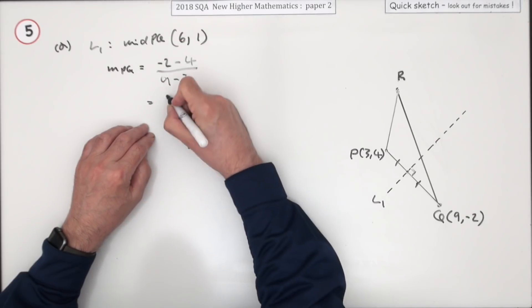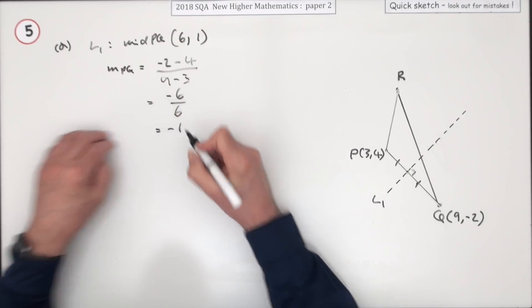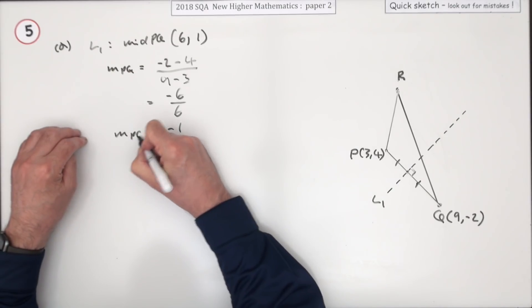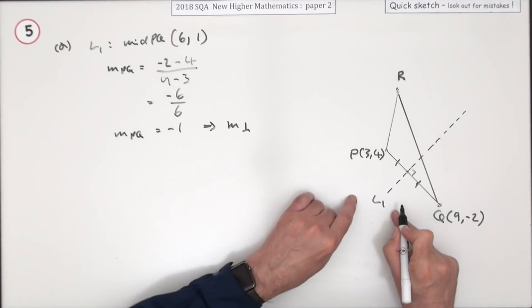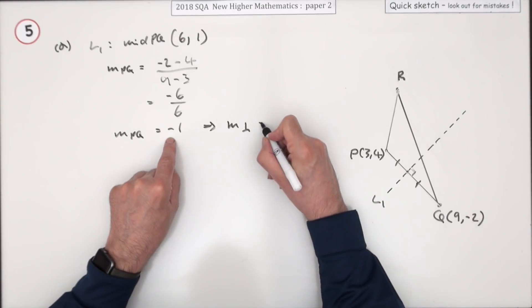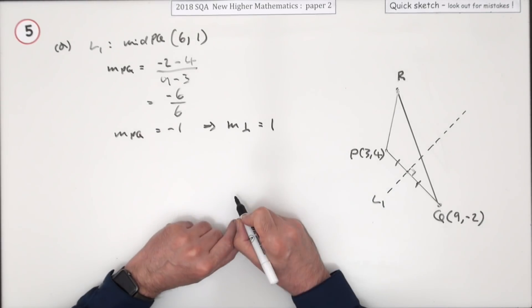So that comes to negative 6 over 6, which is a very nice negative 1. So that means the gradient of that perpendicular line then will be the negative, so it's positive, of the reciprocal, so it's just 1.